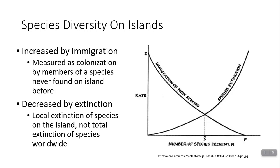Extinction is when that species disappears from the island. Keep in mind, it's a little different from extinction in a general sense — there's worldwide extinction where every member of a species is gone, and then there's this local extinction. When new species immigrate into an area, you get an increase in species diversity. When more species go extinct, that decreases species diversity. There's a point at which the rate of immigration matches the rate of extinction — this is called equilibrium, because species richness stays the same. Since species are still going extinct and colonizing, we call this a dynamic equilibrium.